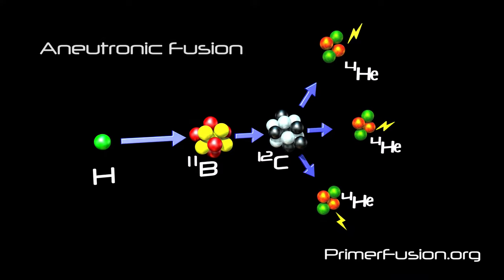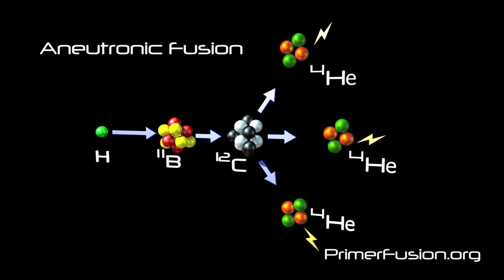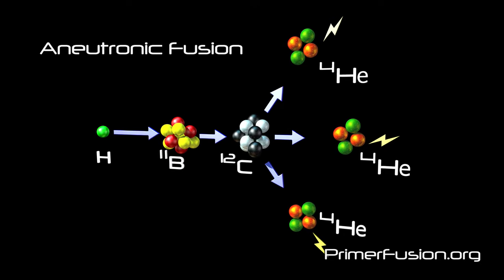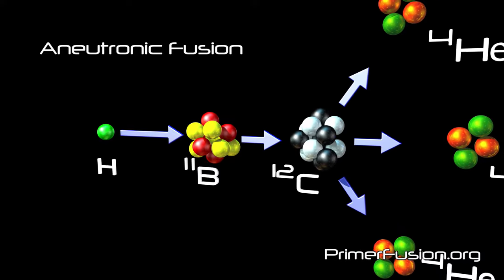This diagram represents the fusion of a hydrogen proton and boron 11. This process is referred to as aneutronic fusion because relatively few neutrons are produced when these two elements undergo fusion.